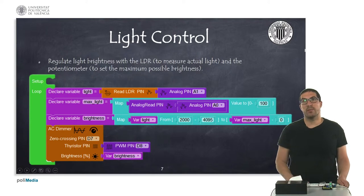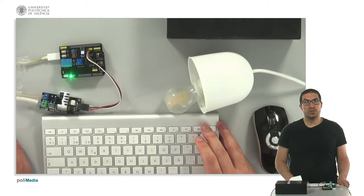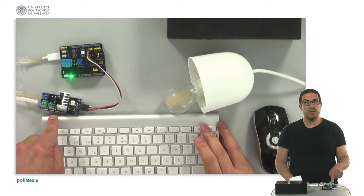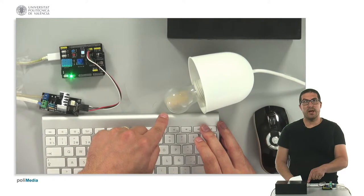Let's switch to the overhead camera to see how it works. I have the board with the potentiometer and the LDR, I have the AC dimmer, and I have the LED lamp.